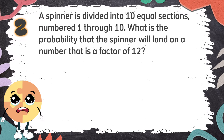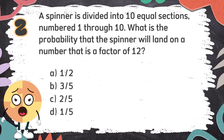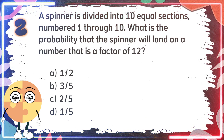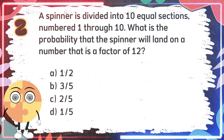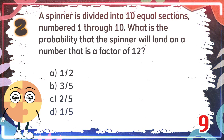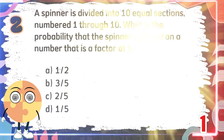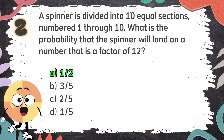Number 2. A spinner is divided into 10 equal sections, numbered 1 through 10. What is the probability that the spinner will land on a number that is a factor of 12? The choices are A. 1 out of 2, B. 3 out of 5, C. 2 out of 5, D. 1 out of 5. The correct answer is A. 1 out of 2.